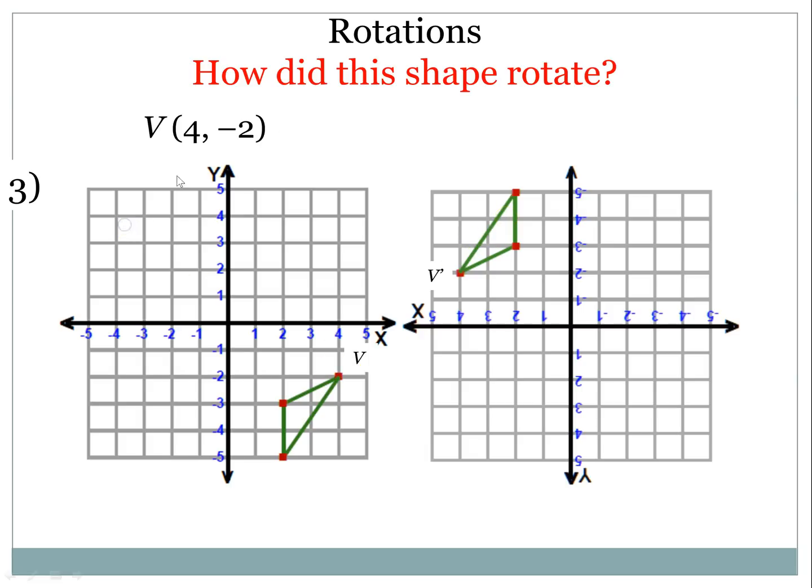So let's look specifically at coordinate V. In the original shape, it is 4, negative 2, and in the next graph, it got switched to negative 4, positive 2. Now, disregard these numbers, I actually rotated the graph itself to give you the new shape, and it is negative 4, positive 2.